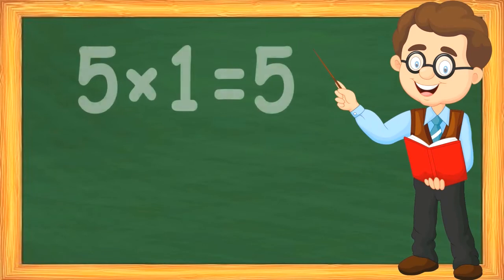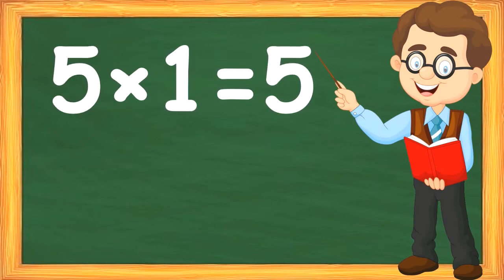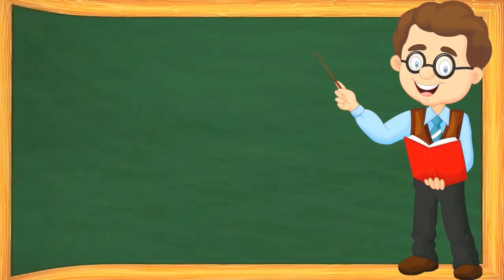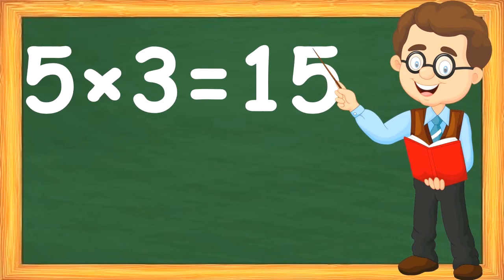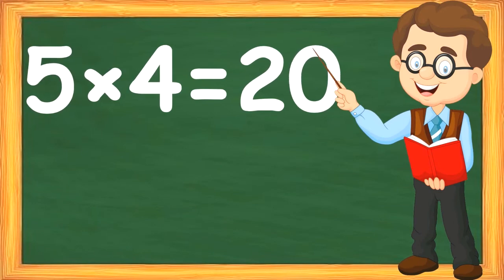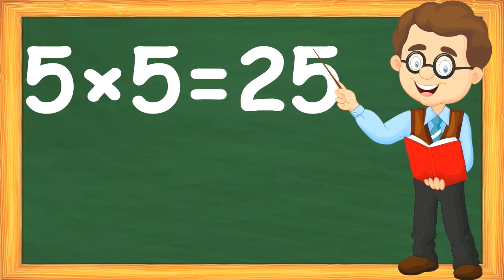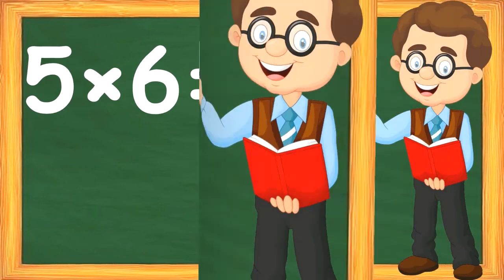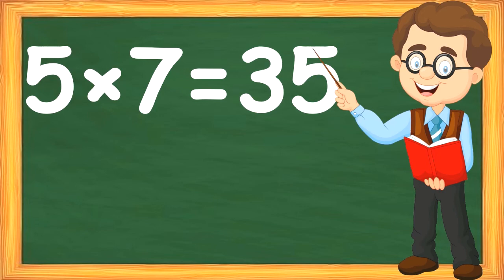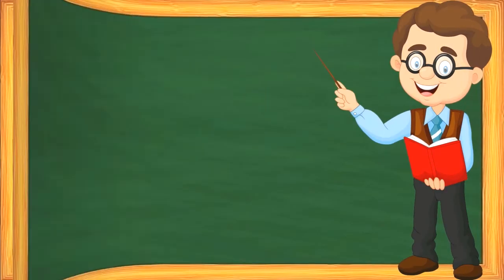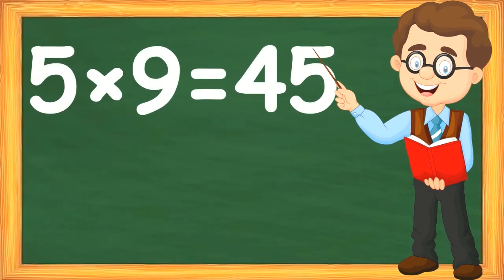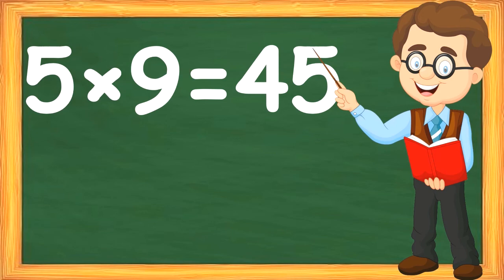5 1s are 5, 5 2s are 10, 5 4s are 20, 5 5s are 25, 5 6s are 30, 5 7s are 35, 5 8s are 40, 5 9s are 45, 5 10s are 50.